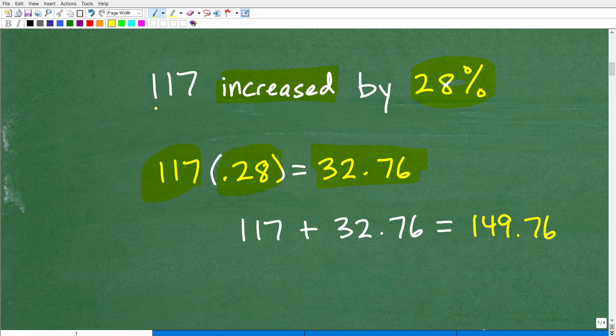Okay, so if 117 is increased by 28%, which is effectively, again, 32.76, well, what's the answer? Well, we got 117, and we're increasing it by 32.76, which, of course, is 28% of this original number. We add those two numbers together, and we get 149.76. Okay, so this is one approach, perfectly fine to answer a percent of increase.